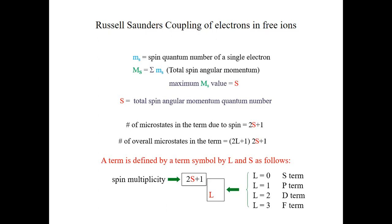We have introduced the concept of microstates, and we have said that a set of microstates that has the same energy defines a term. We then looked at how we can actually find these microstates that have the same energy, and how the orbital quantum numbers and the spins are combined to give total orbital quantum numbers and spins that define a term.